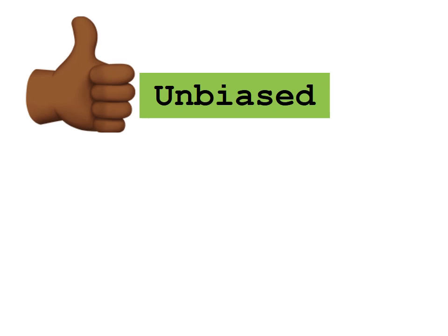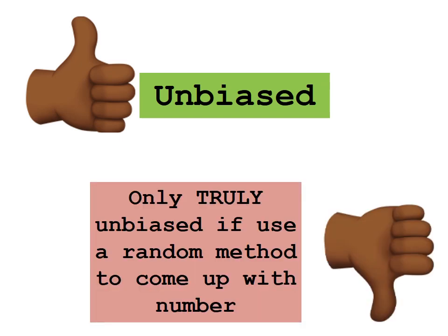A strength of systematic sampling is that it is unbiased — each member of the target population has an equal opportunity of being picked. However, it is only truly unbiased if we use a random method to come up with the number we use for the system, whether it's every second person or every seventh person.